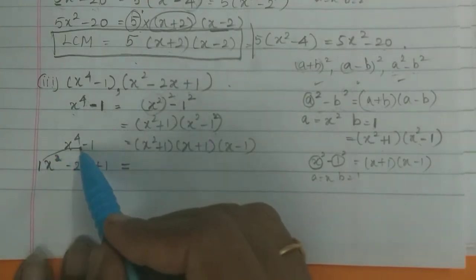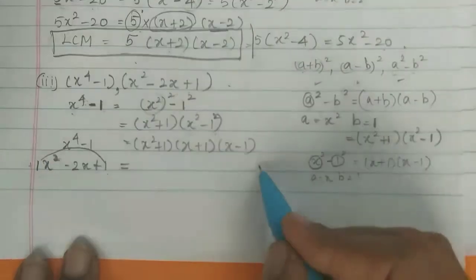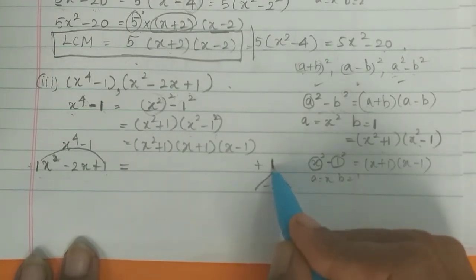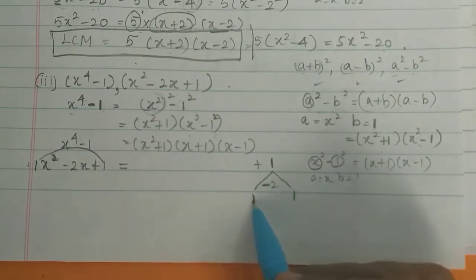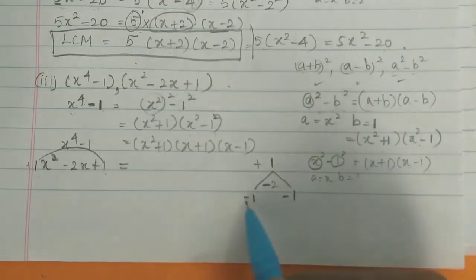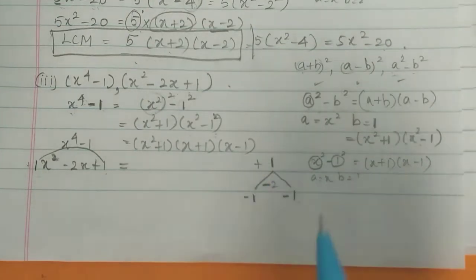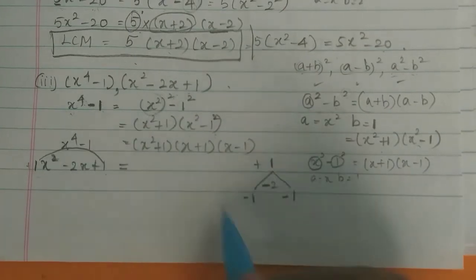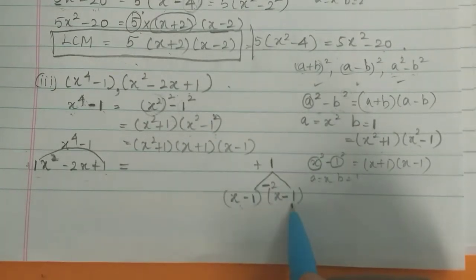To factorize x² - 2x + 1, we multiply the coefficient of x² (which is 1) by the constant (which is 1), giving 1. We need two numbers that multiply to 1 and add to -2: those are -1 and -1. So the factors are (x-1)(x-1), which equals (x-1)².